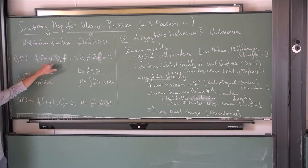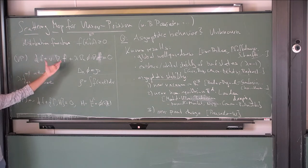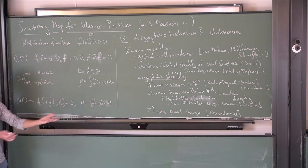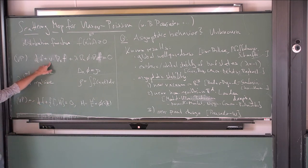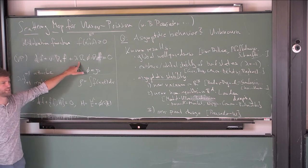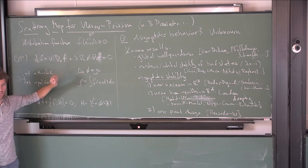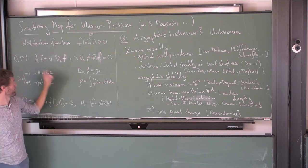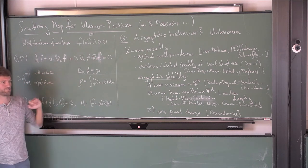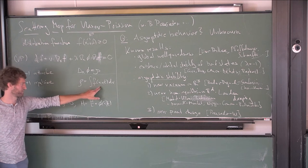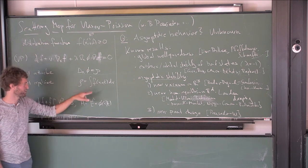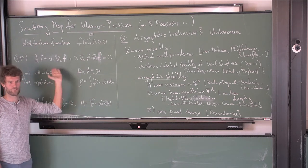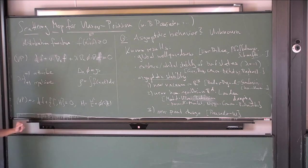It's a transport equation that, at the level of characteristics, is just transport like a classical particle in a potential field: the derivative of x in time is v, and the derivative of v in time is the gradient of the potential. What makes this a nonlinear problem is that this potential is self-generated by the distribution itself — you integrate the distribution over all velocities to get the density, then solve a Poisson problem to get the field.